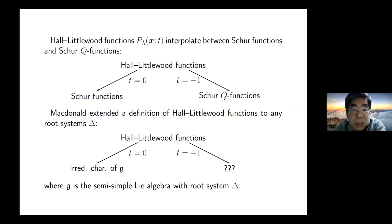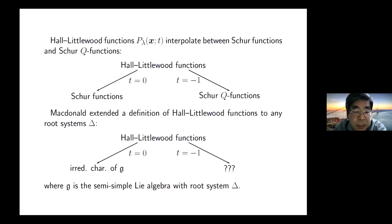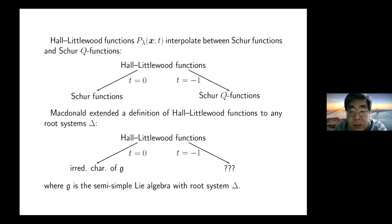This is the type A case. MacDonald extended the definition of Hall-Littlewood Functions to an arbitrary root system. If t equals zero, you get the irreducible character of the corresponding semi-simple Lie algebra. The main motivation is to study the t equals minus one variation of this Hall-Littlewood Function associated to the root system.